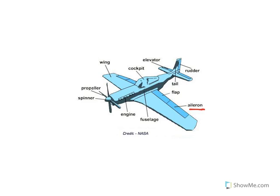The next part I want to look at is called the elevator. The elevator can be controlled in an up and down motion. When angled up, the nose of the plane rises, and when the elevator is lowered, the nose drops.